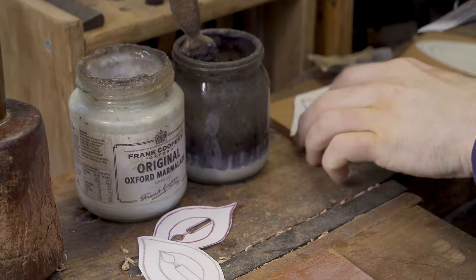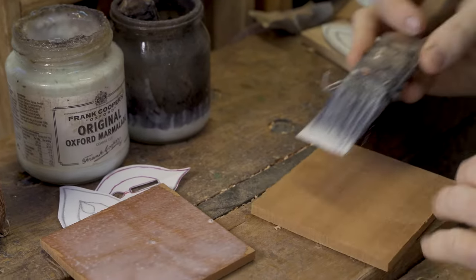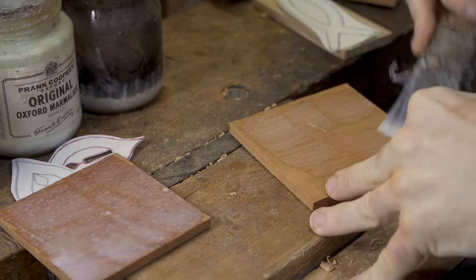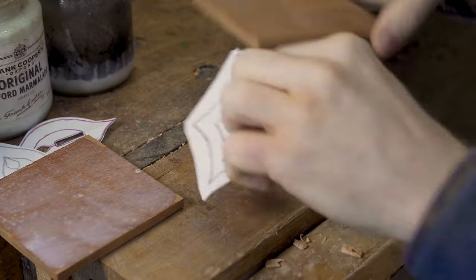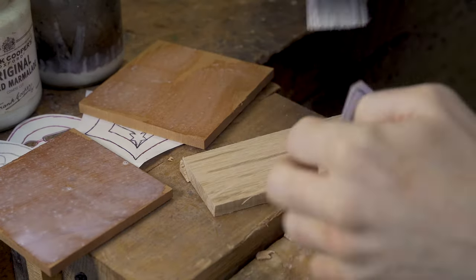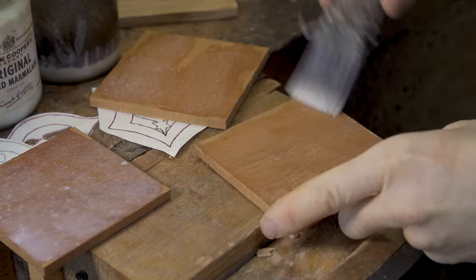We start off by wetting the wood with a water-based PVA solution. We then use PVA glue on the back of each design and stick it onto the wood itself.